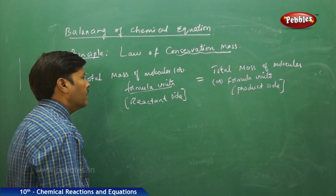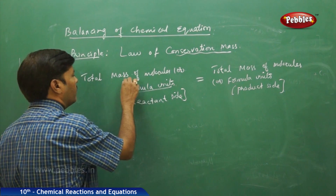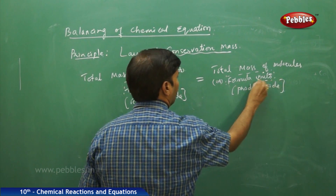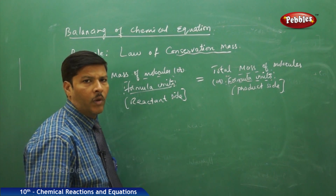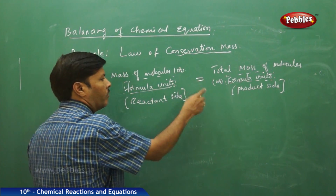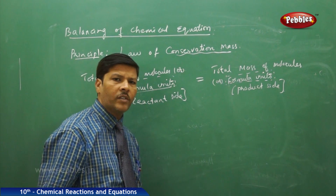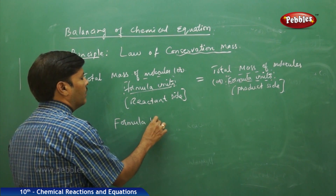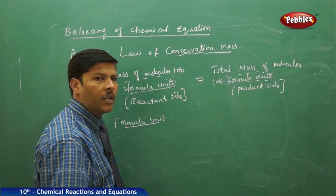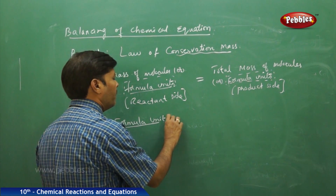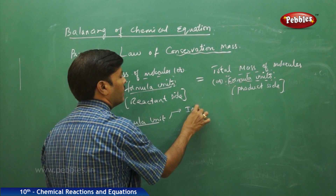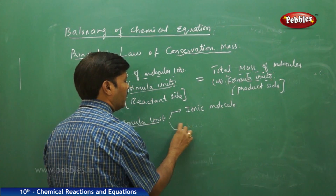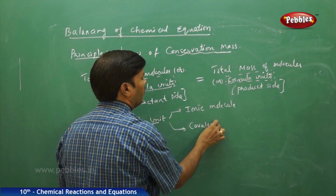Because we are using the term 'formula units' in the reactant side and product side, what do you mean by a formula unit? You may not be that familiar with this term, but a formula unit can be either an ionic molecule or a covalent molecule.